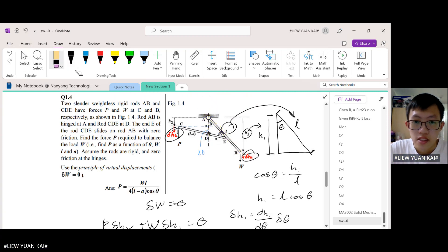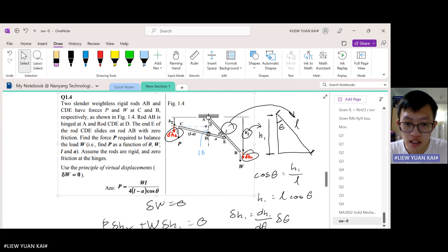Now let's find delta h2. Notice that this angle over here is 2 theta. Now why is that the case? Let's zoom into this photograph here.